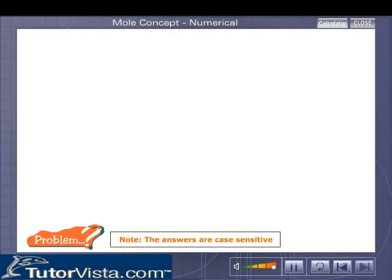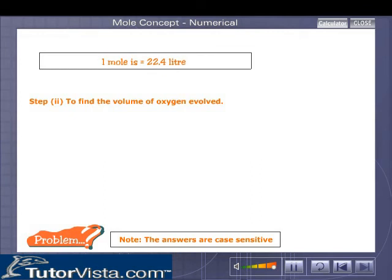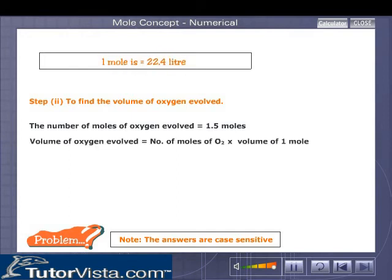We proceed towards solving step two: finding the volume of oxygen evolved. In the previous step, we have found out that the number of moles of oxygen evolved is equal to 1.5 moles. Volume of oxygen evolved is equal to the number of moles of oxygen evolved into volume occupied by 1 mole of a gas at STP. Remember the unit of volume is liter. Simple, isn't it? So that is equal to... calculate it yourself. Don't forget the units.